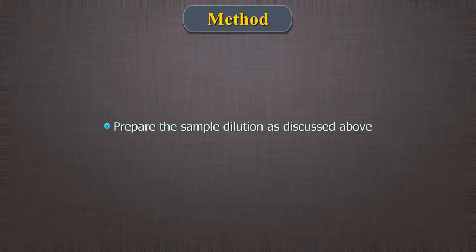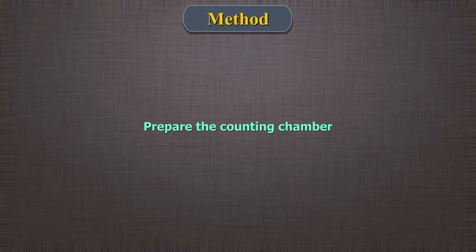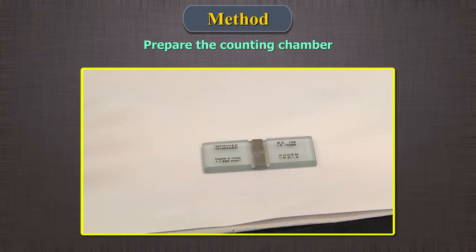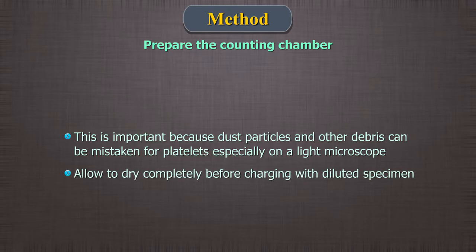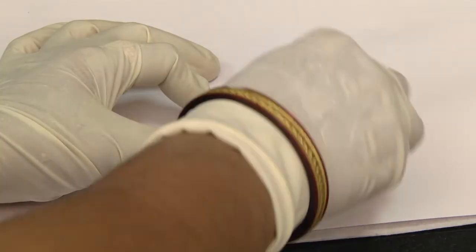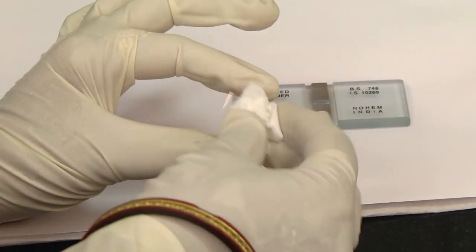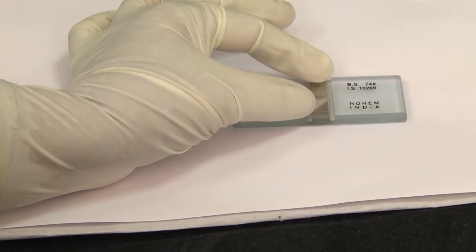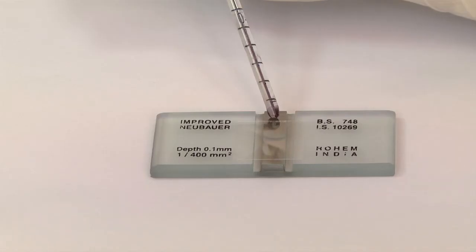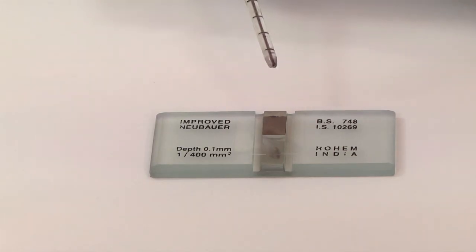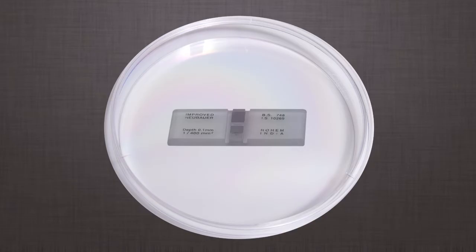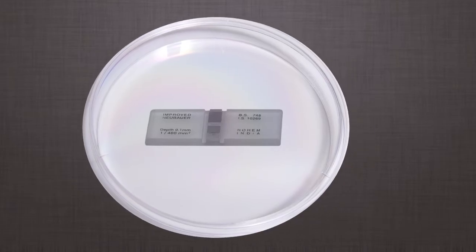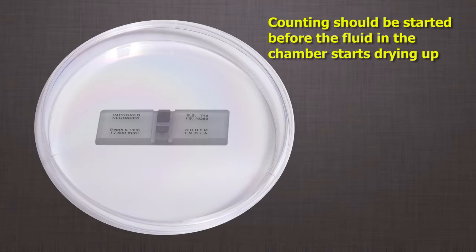Method: 1. Prepare the sample dilution as discussed above. 2. Prepare the counting chamber — meticulously clean the hemocytometer with lint-free paper. This is important because dust particles and other debris can be mistaken for platelets, especially on a light microscope. Allow to dry completely before charging with diluted specimen. 3. Clean the mirror-like polished surface carefully with lens paper. The coverslip is also cleaned and placed over the counting surface prior to putting on the cell suspension. Charge the counting chamber by allowing a small drop of fluid to form at the tip of the pipette and gently bringing it into contact with the edge of the coverslip. 4. After charging the chamber, keep it in a moist Petri dish for 20–30 minutes to allow platelets to settle down. Counting should be started before the fluid in the chamber starts drying up. Moistened filter paper or cotton retains evaporation of diluted specimen while standing.